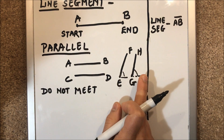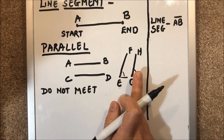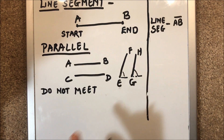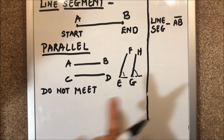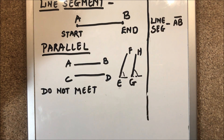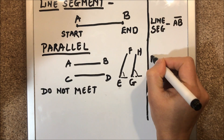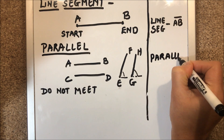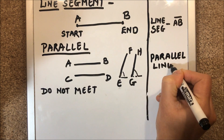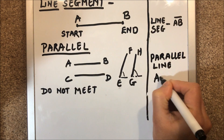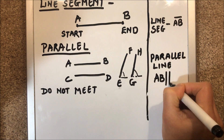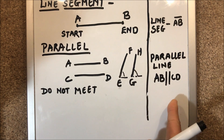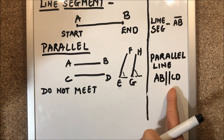If they make different angles, then they will intersect at some point — that is the condition for them not being parallel. Parallel lines are lines which do not intersect at all. We represent parallel lines with two straight bars, so AB is parallel to CD.